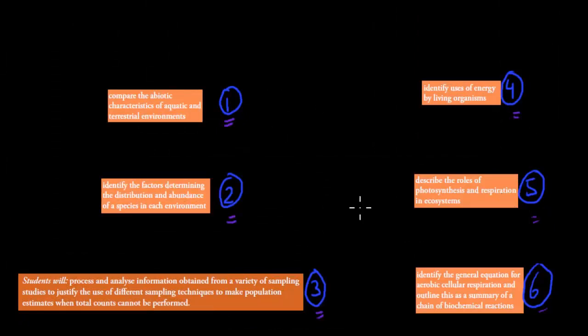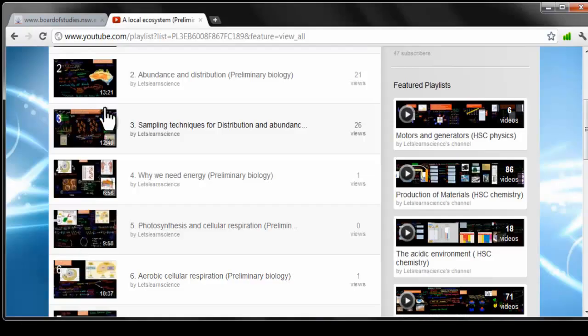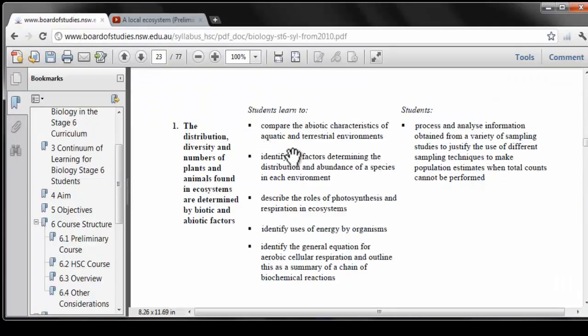And the reason why I should know that is because these six syllabus dot points are covered in the Board of Studies. So this is the Board of Studies, and I'm going to attach this actual document in your description below. But here this is the chapter, Distribution, Diversity, and Numbers. And here are our six syllabus dot points. One, two, three, four, five, six. So these are covered in the videos. And more or less every single school has to cover these syllabus dot points. So we cover stuff that you would cover in class as well.